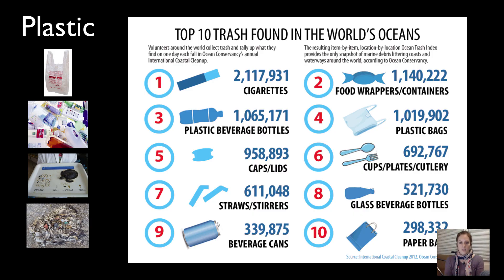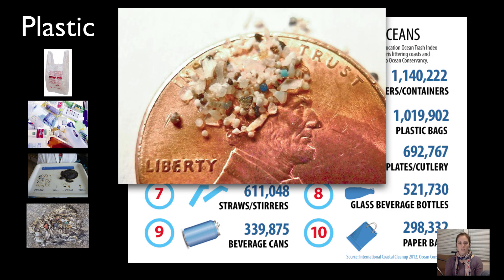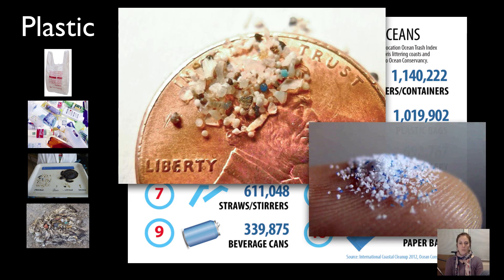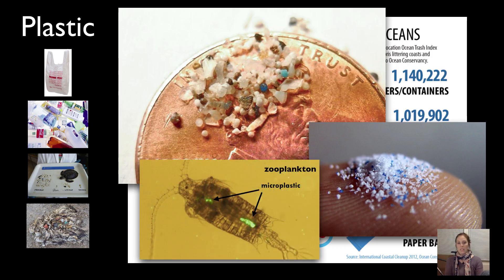The Ocean Conservancy does annual cleanups where volunteers go to the beach, collect trash, and count their finds. The top 10 items found on beaches show staggering numbers from just one day of cleanup. A lot of plastic doesn't go away — it either stays around for years or gets broken down into tiny pieces called microplastics, sometimes too small to see without a microscope. Zooplankton eat these microplastics, then fish eat the zooplankton, and it travels up the food chain until we end up with plastic in our own bodies.